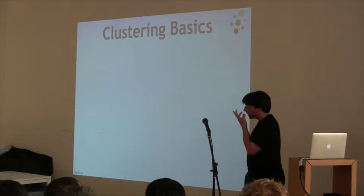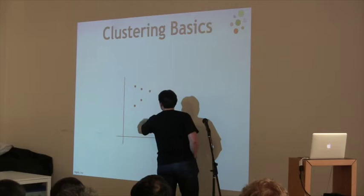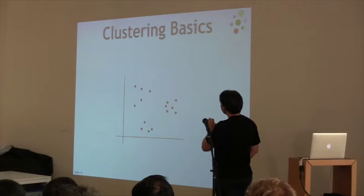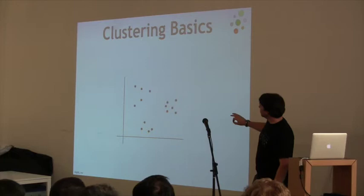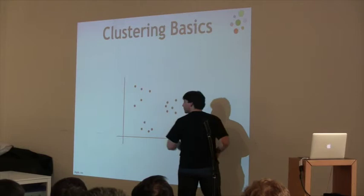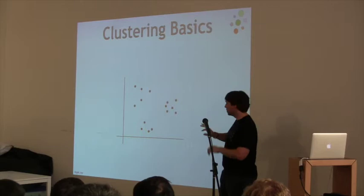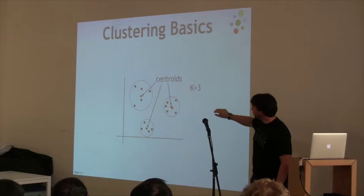How does clustering work? If I gave you a simple 2D graph and said 'make three clusters,' humans are pretty good at this — these points look similar, those look similar. The algorithm does exactly that, except in multiple dimensions. You tell it you want, say, three clusters, and it randomly chooses three starting points, computes distances between all points, and iteratively moves the centers closer together until they distribute nicely. What you end up with is a centroid — a point at the center of each cluster.